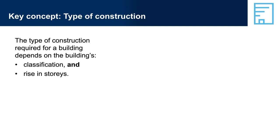Key Concept — Type of Construction. The type of construction required for a building depends on a combination of the building classification and the rise in stories. These two factors determine the risk to the building and its occupants from fire. The building classification points to a building's likely use, fire load, population, and the mobility of its occupants — for example, whether they are likely to be sleeping or alert.